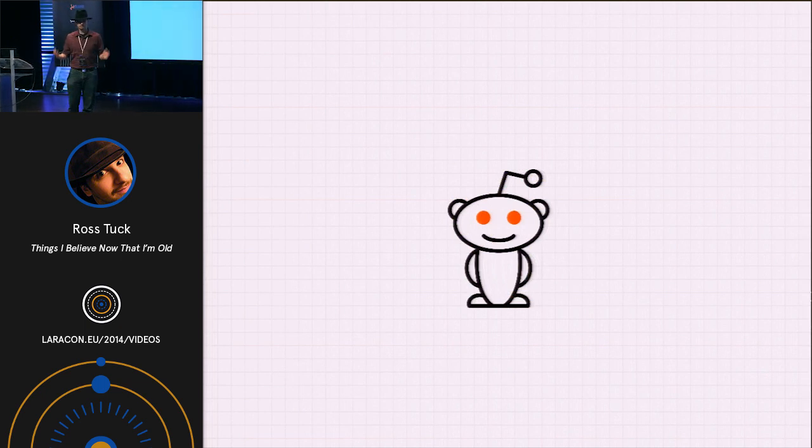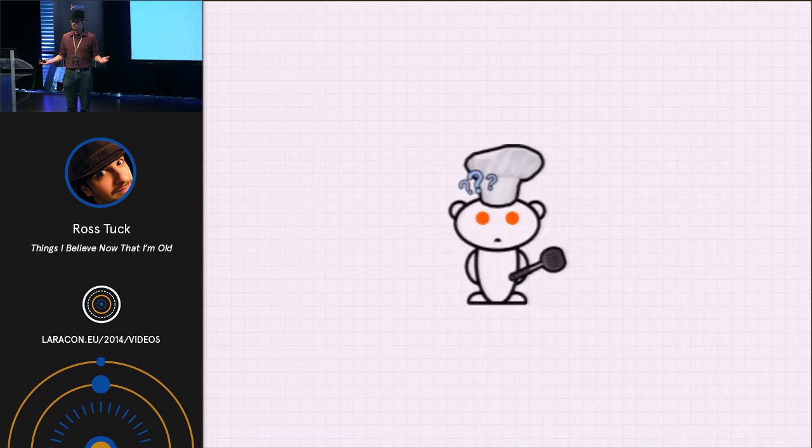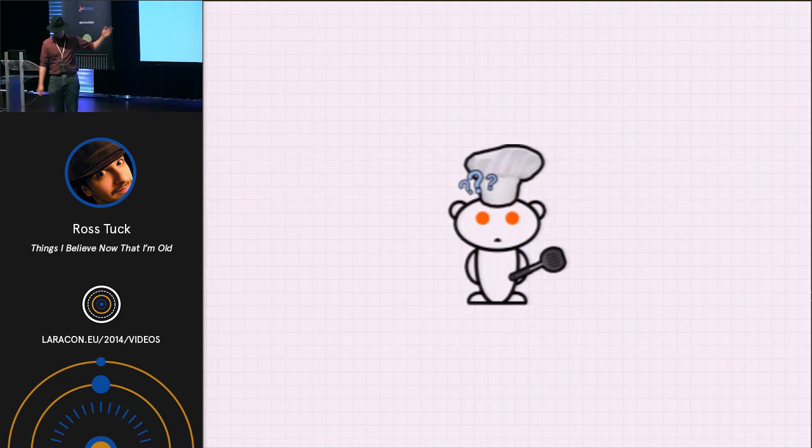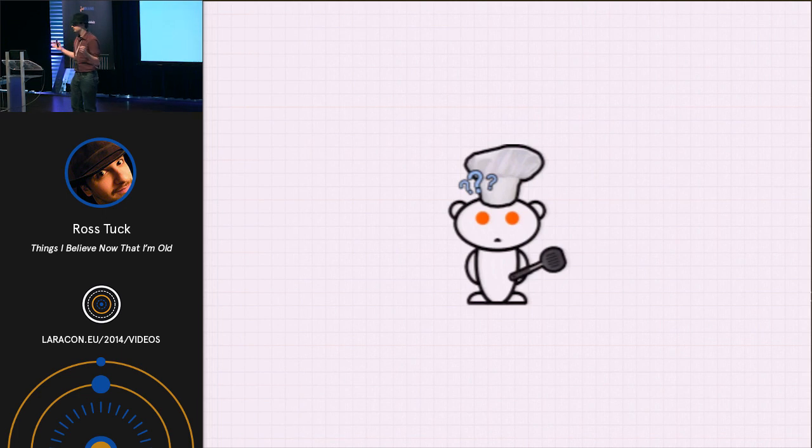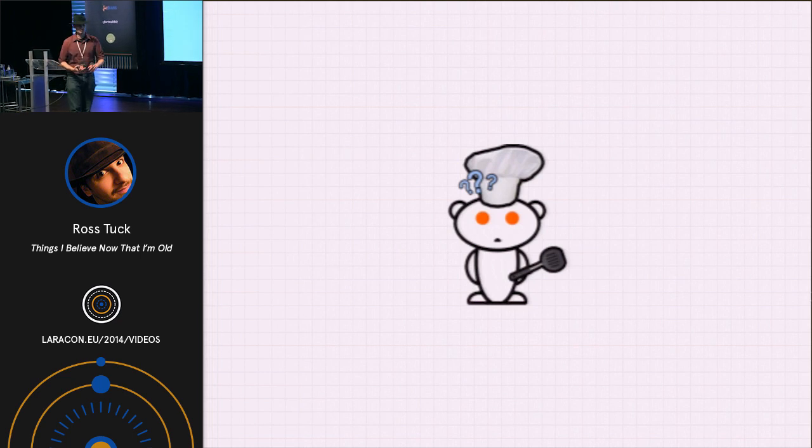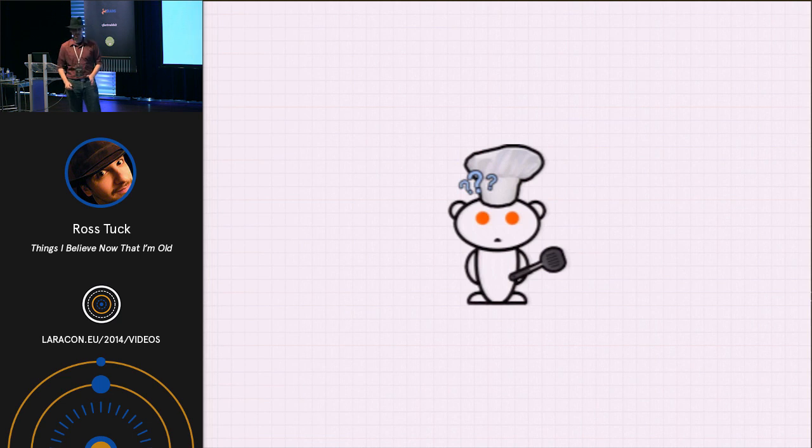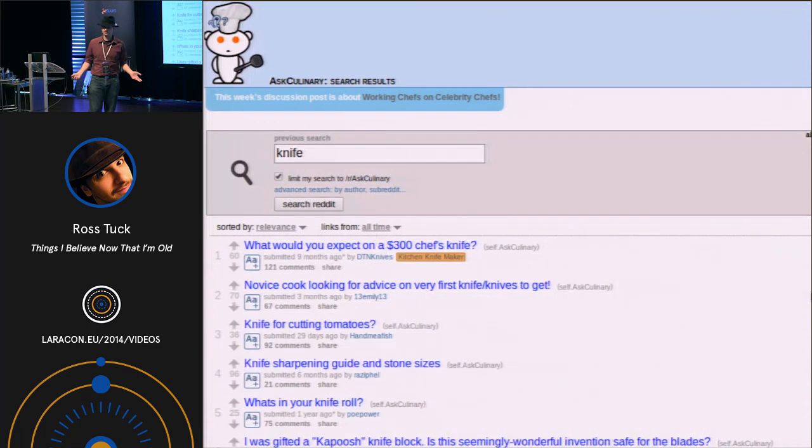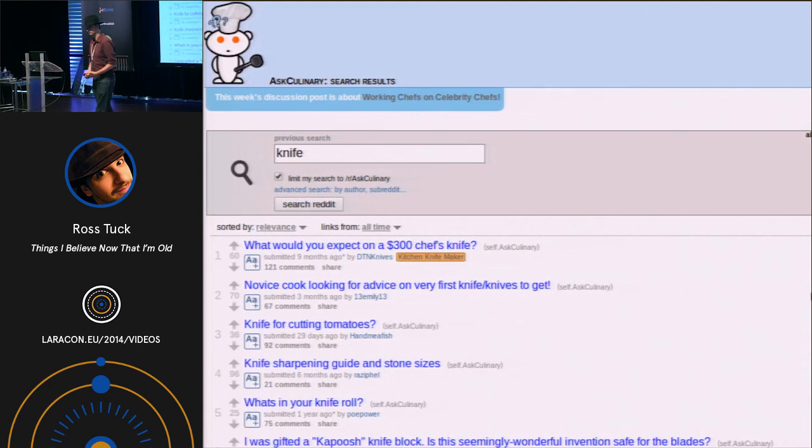So the great thing about Reddit is all these little sub-communities, like Ask Culinary. And the great thing about Ask Culinary, aside from their low-res logo, is the fact that they're full of all sorts of culinary professionals, like people who manufacture kitchen equipment, chefs, home cooks, you name it.